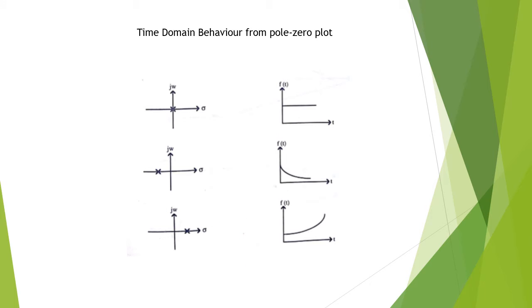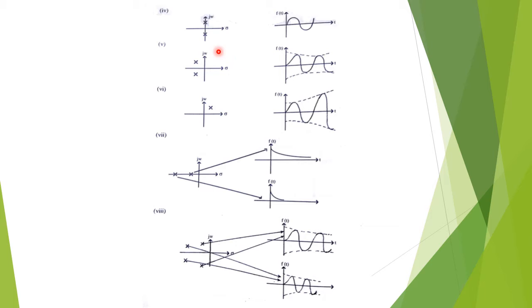For a bounded input, a right-half-plane pole gives an unbounded output. If we have complex conjugate poles on the imaginary axis, we get sustained sinusoidal oscillations; the system is stable and realizable. If complex conjugate poles are on the left half of the s-plane, we get underdamped oscillations that dampen over time — the function is stable and realizable. But with complex conjugate poles on the right half of the s-plane, the oscillations increase over time, giving an unbounded response for a bounded input — the function is unstable or unrealizable.